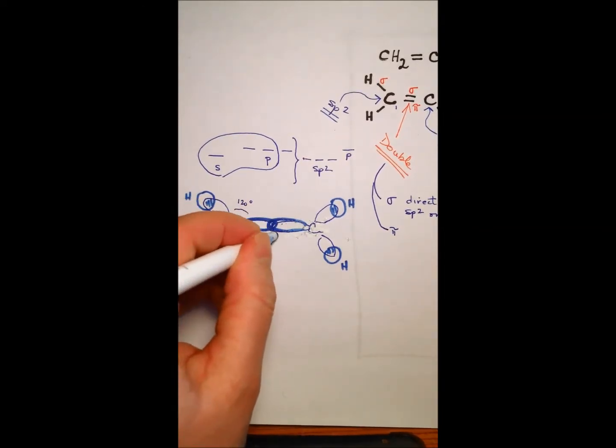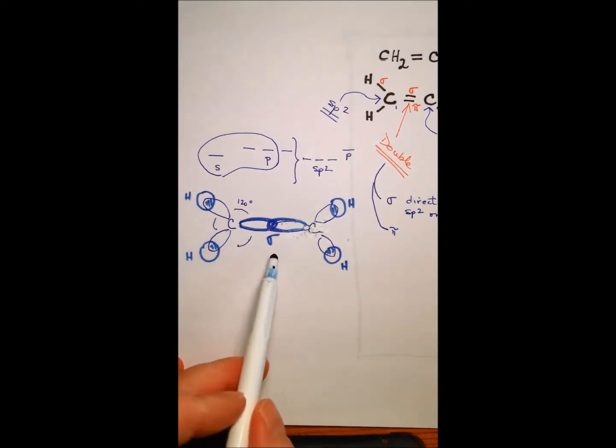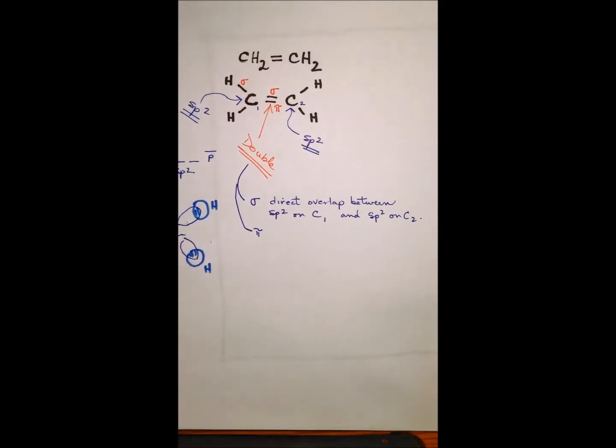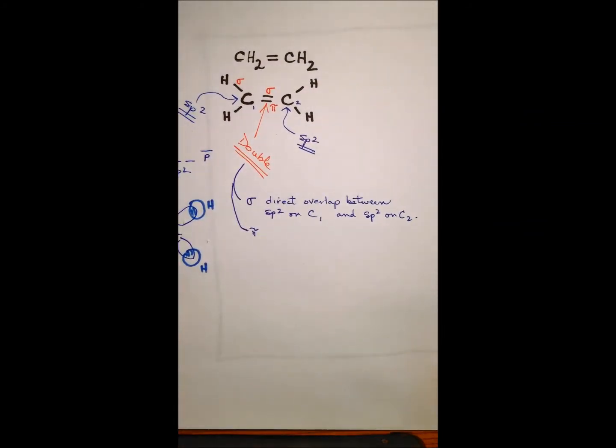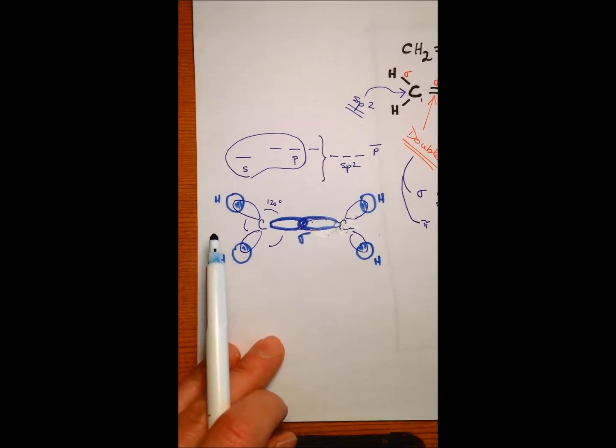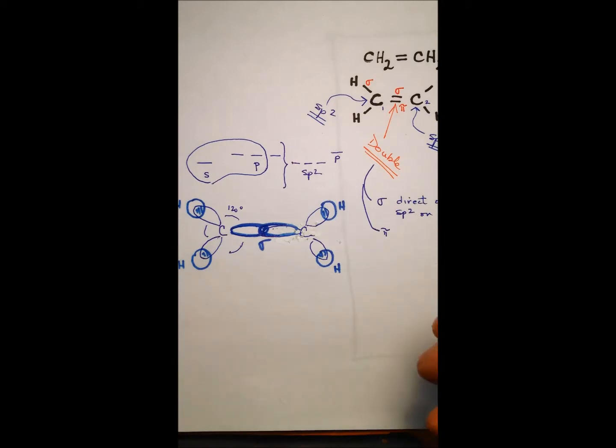Okay, so here's my overlap here. There's the sigma part of this double bond, and so it is an overlap, as we said, a direct overlap between sp2 on C1 and sp2 on C2.